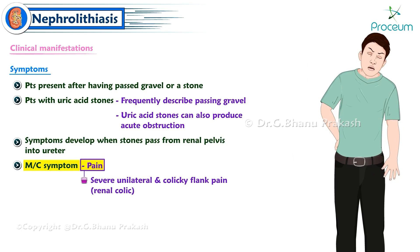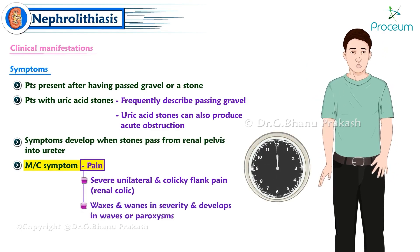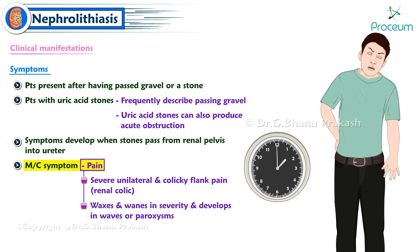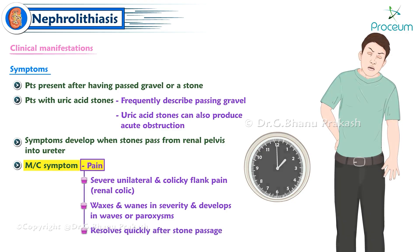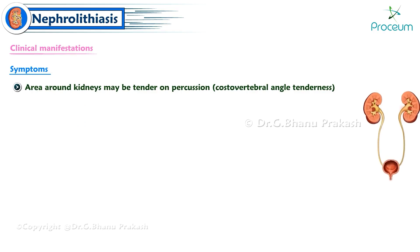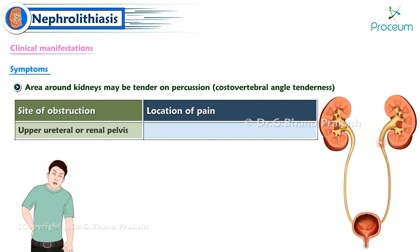Symptoms develop when stones pass from the renal pelvis into the ureter. Pain is the most common symptom — severe, unilateral, colicky flank pain (renal colic) — which typically waxes and wanes in severity, developing in waves or paroxysms. Pain due to a kidney stone typically resolves quickly after stone passage. The area around the kidneys may be tender on percussion (costovertebral angle tenderness).